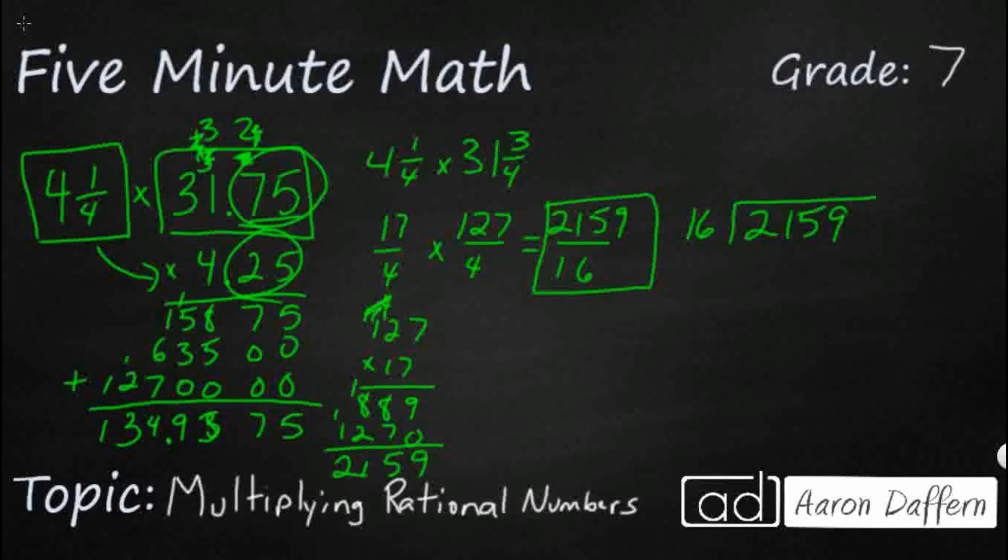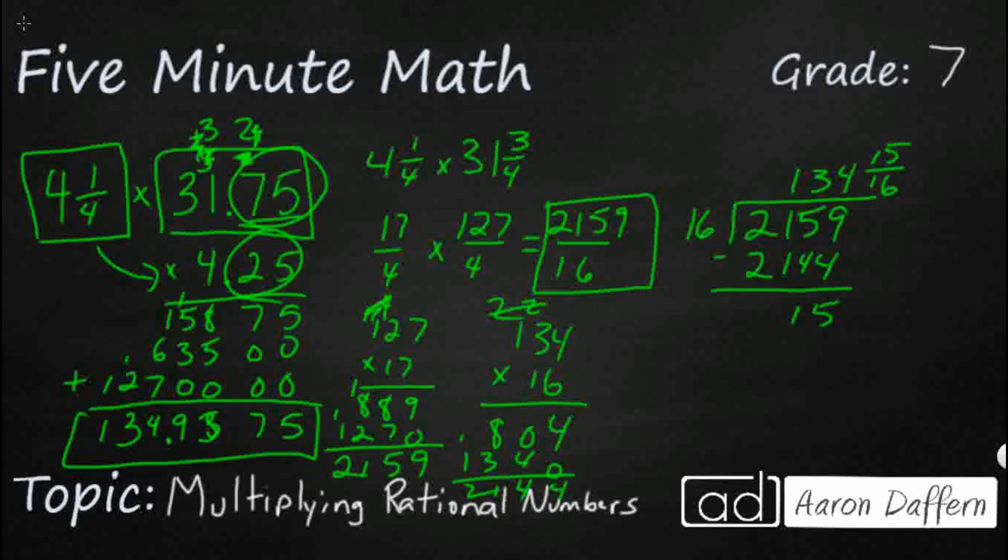Now I'm going to cheat and I'm going to say that it's going to go in 134 times. And let's see what 134 times 16 is. That's 21, 44. So if I subtract, I've got 15. So that's very close. So I'm going to end up with 134 and 15 sixteenths, which is my same answer over here. And that is how you multiply rational numbers.